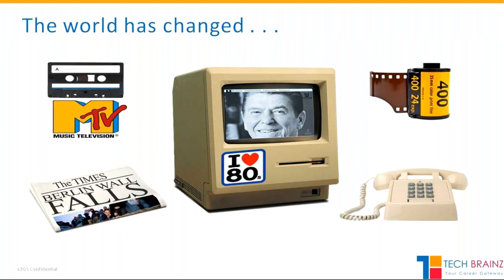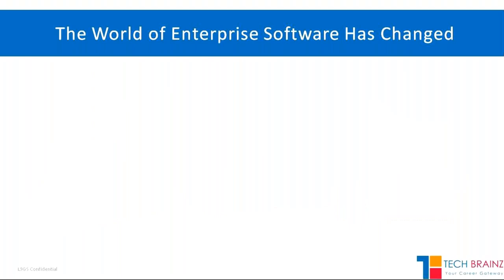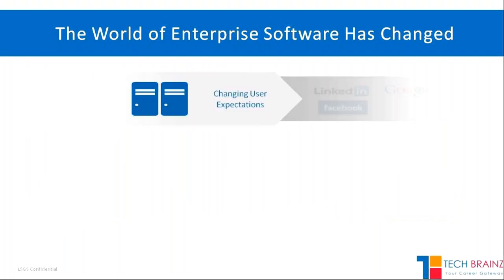When you see cassettes or music television, these are inventions we saw in our generation — advanced things that existed when we were born. From there, a lot of transformation has happened within two or three decades. The world is changing enterprise software in different ways, mainly based on user expectations.